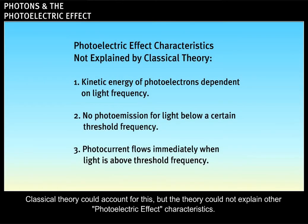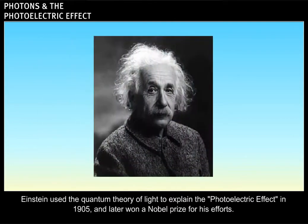Classical theory could account for this, but the theory could not explain other photoelectric effect characteristics. Einstein used the quantum theory of light to explain the photoelectric effect in 1905 and later won a Nobel Prize for his efforts.